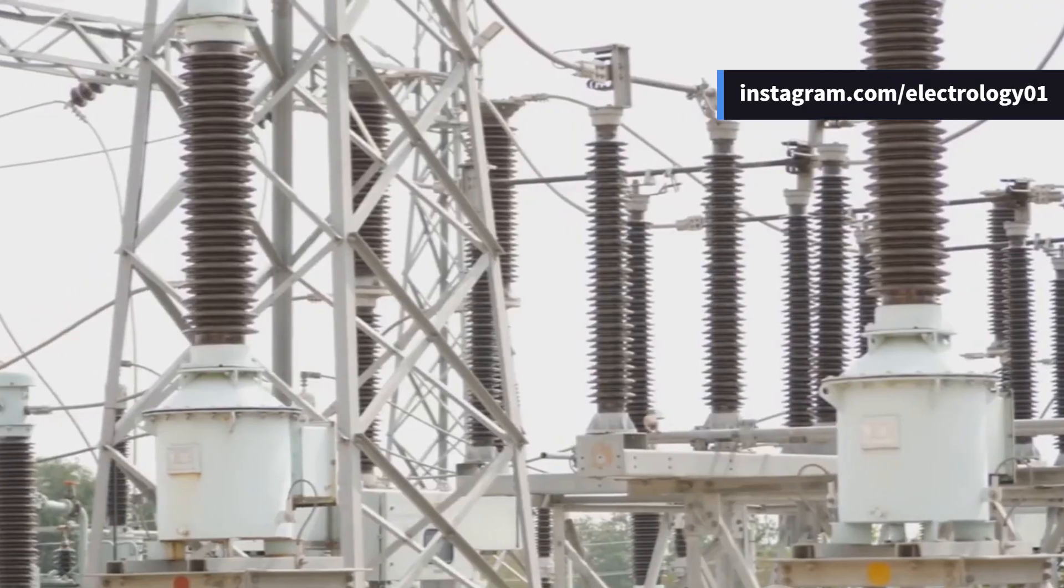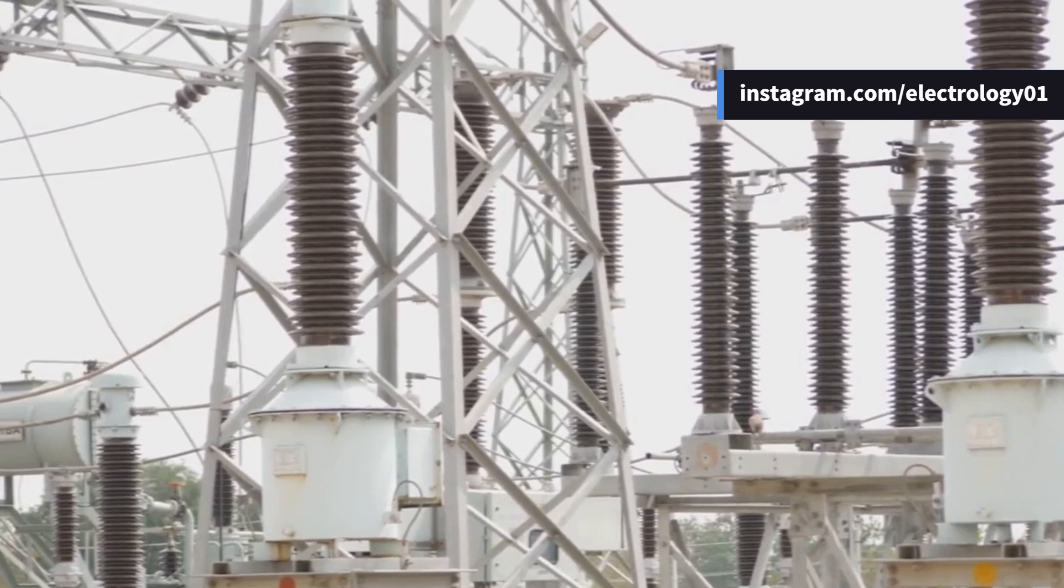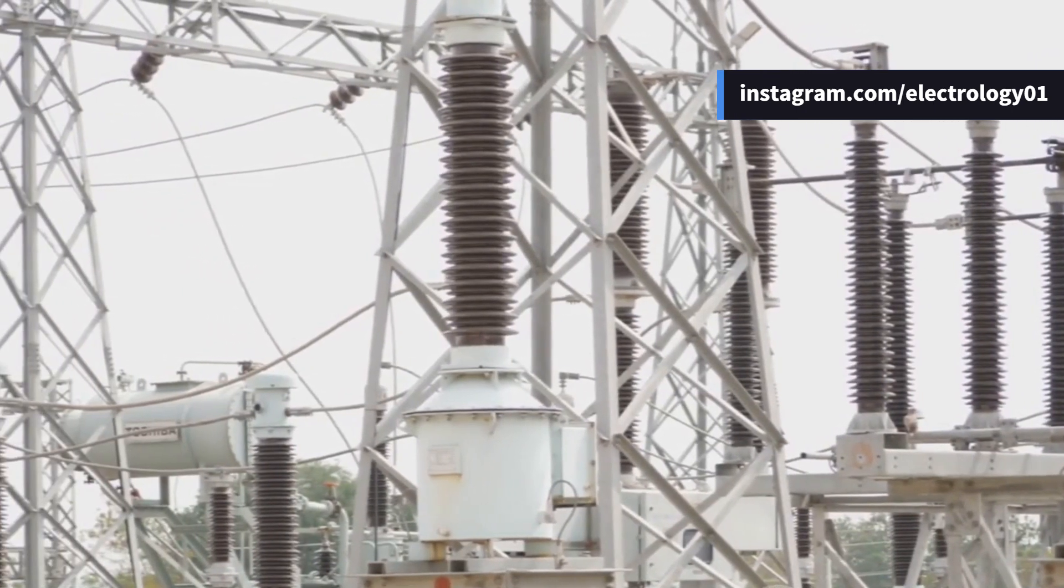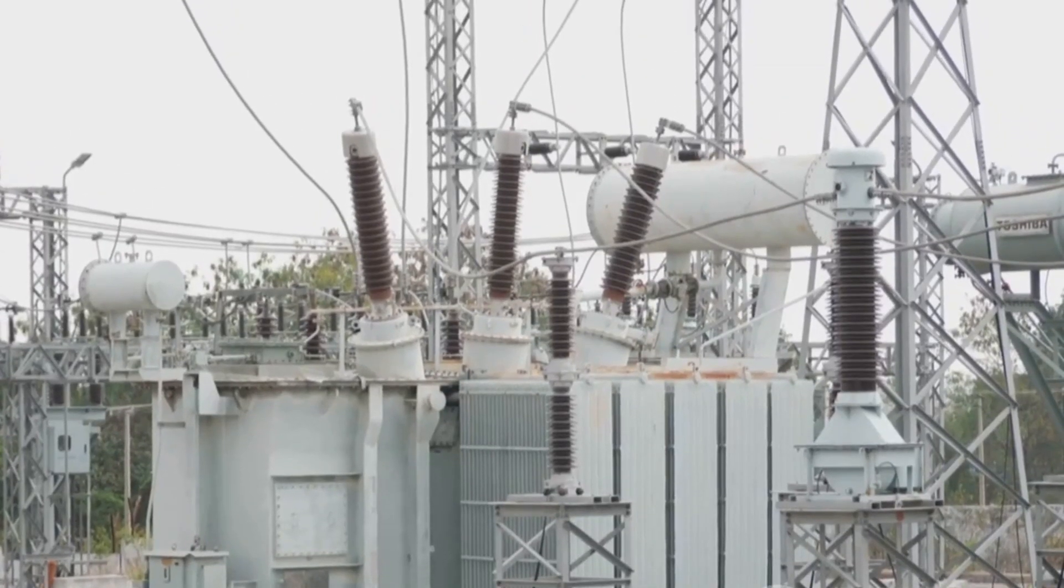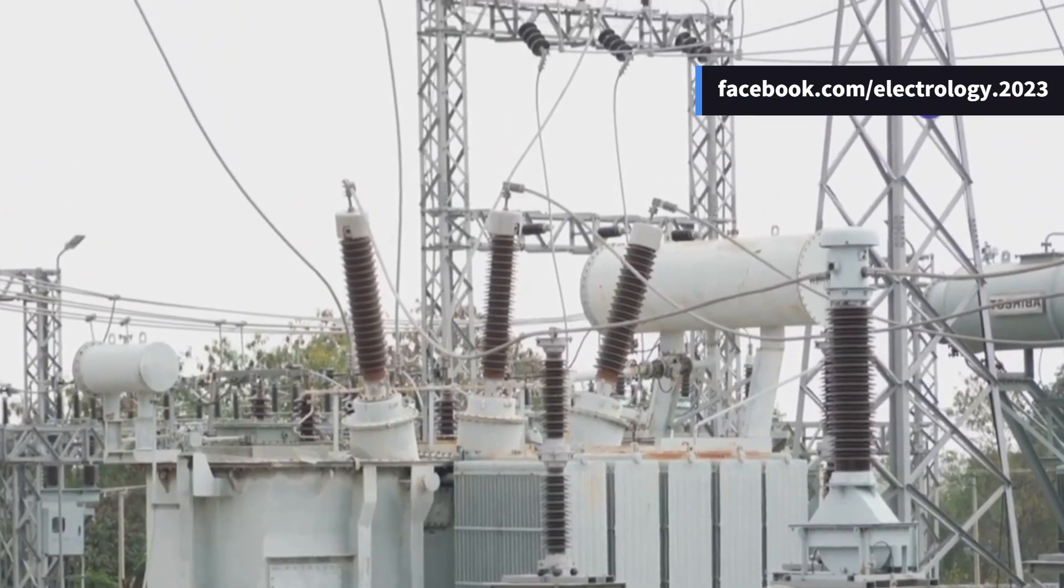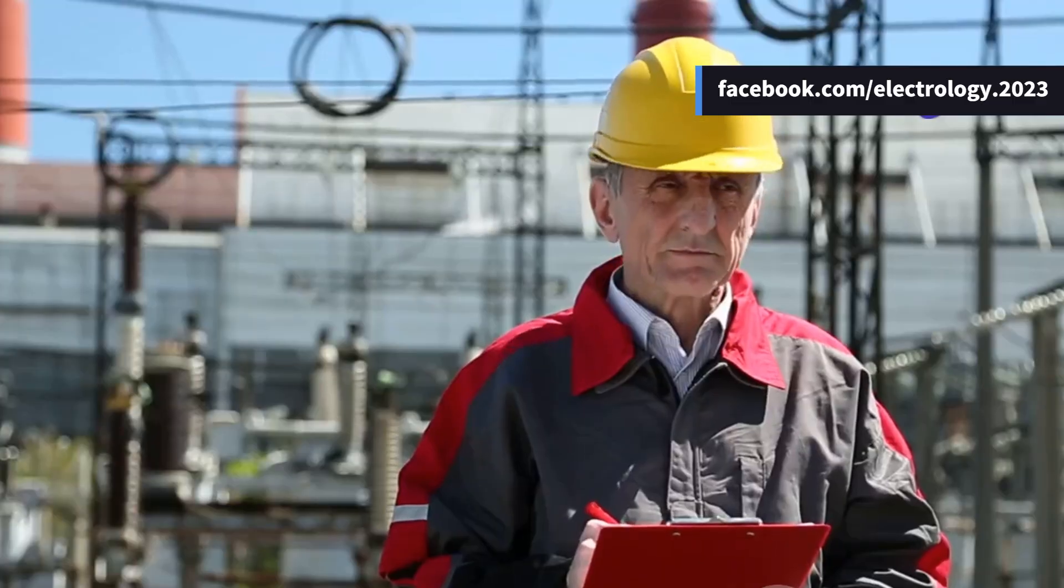This is used to eliminate the zero-sequence current component from the secondary current of a current transformer in differential protection of a transformer. This technique is particularly useful in transformers with an earthed star winding. So, let's dive deep into it.